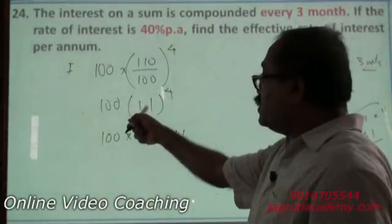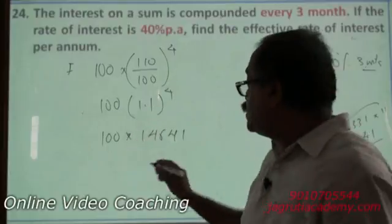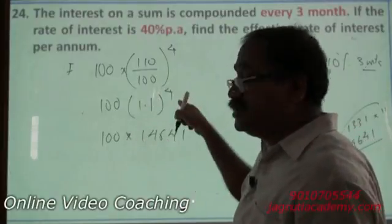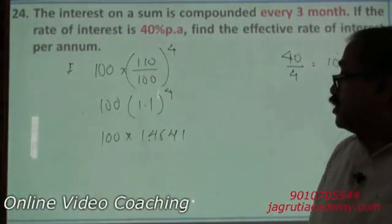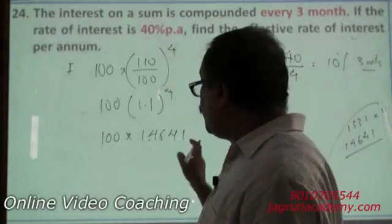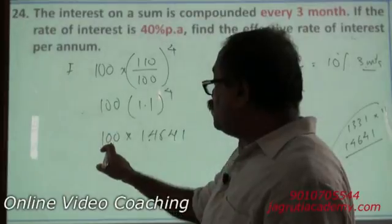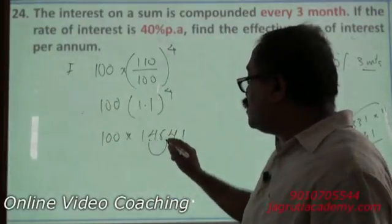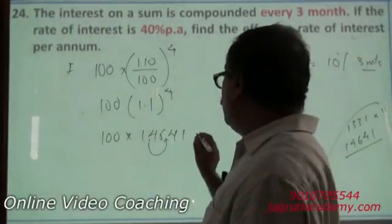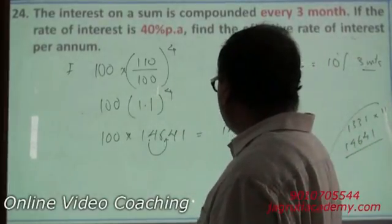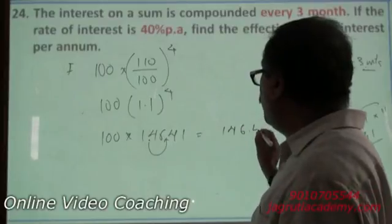Where should be the decimal? After decimal there must be 2 digits. So therefore 4 digits. Therefore the decimal will come over here. So when I multiply with 100, as 2 zeros are there, the decimal will be shifted 2 more digits. So the decimal will come here. So your end value is 146.41.